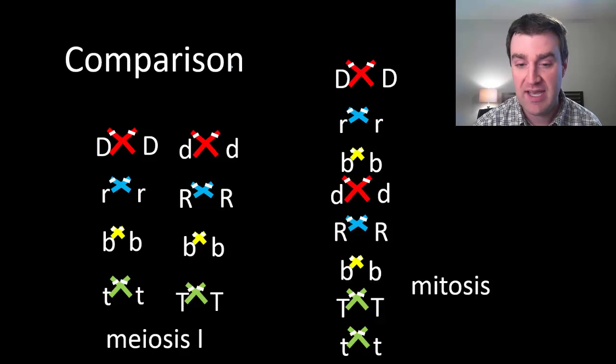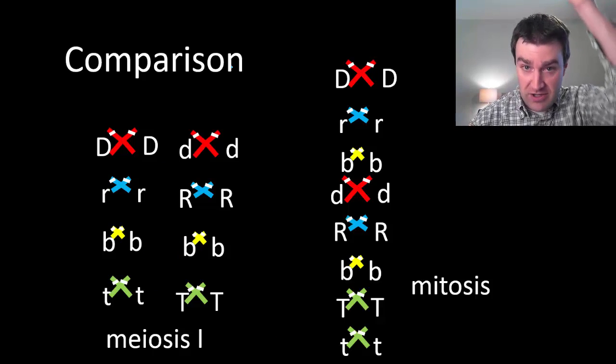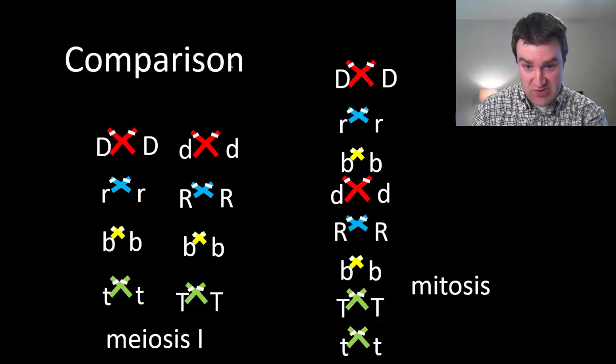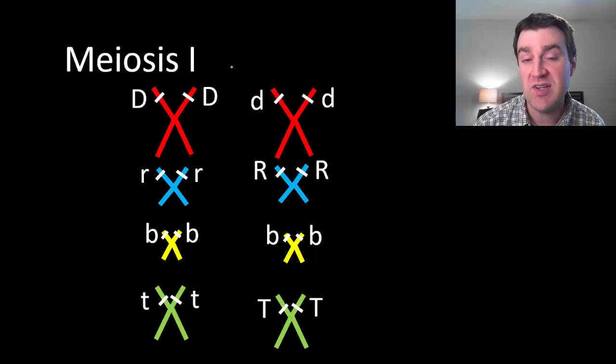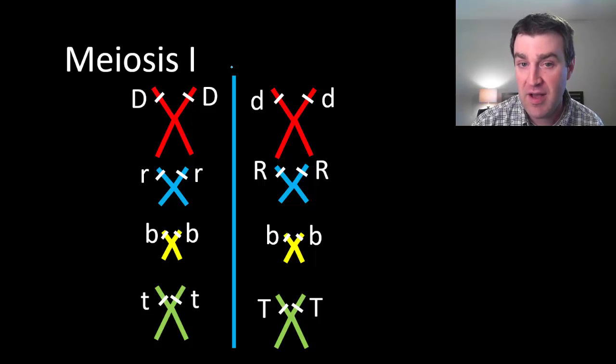Just as a reminder, in mitosis we just lined all of the X's up in one straight line. We didn't bring the pairs side by side. So this is a very different lineup. We're going to split the DNA symmetrically just like we do with any cell division. So in this case that would be splitting the homologous pairs apart from each other.